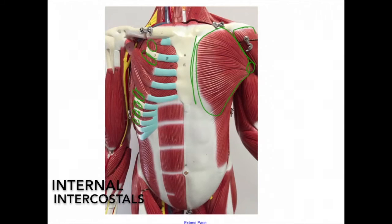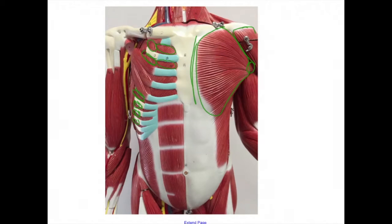The internal intercostals are located here. They originate from the superior border of the ribs to the inferior border of the ribs. The action is to depress the ribs.